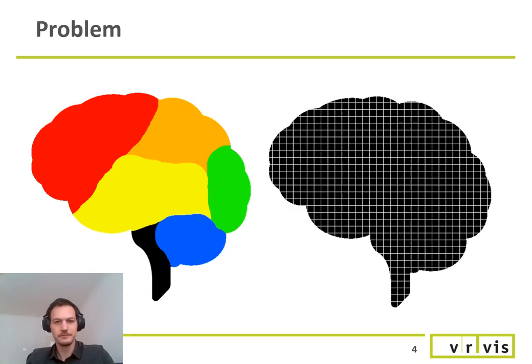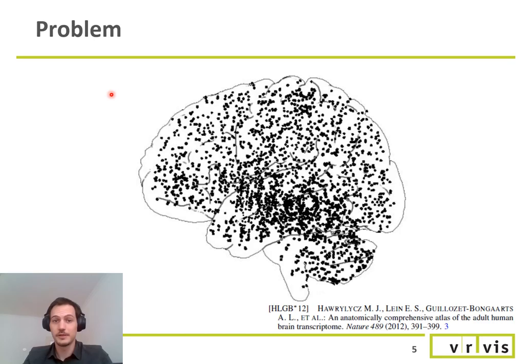When visualizing spatial brain networks one can easily run into problems regarding clutter, occlusions and complexity. Here for example we are looking at a static brain network with just 22 brain regions or nodes where we have already 484 edges.